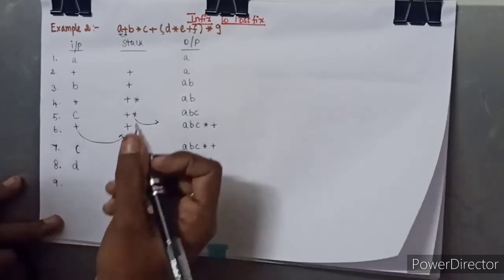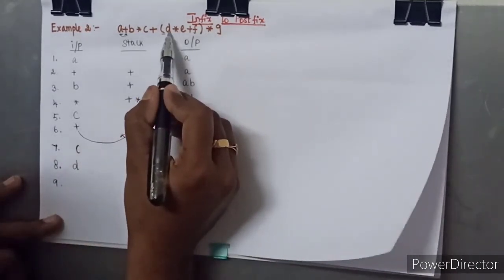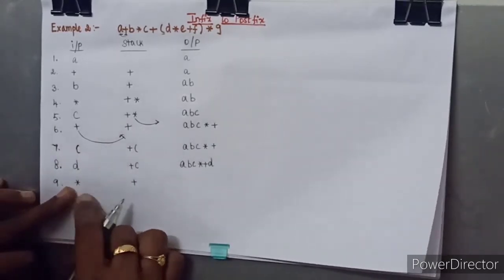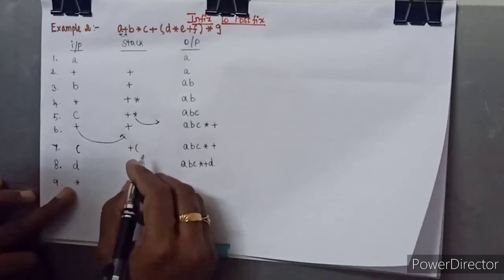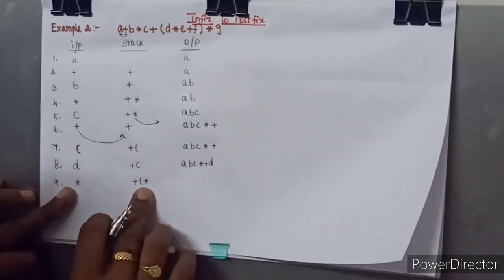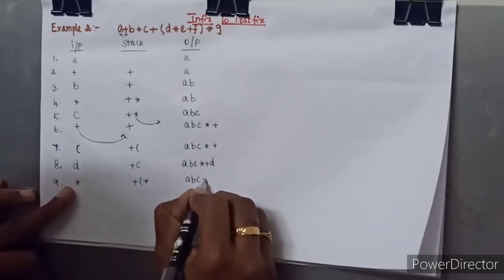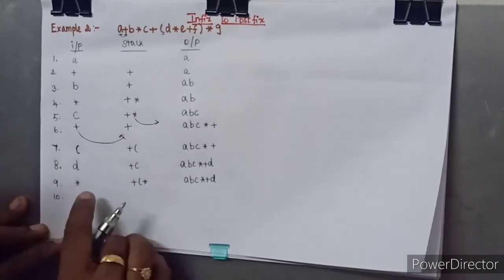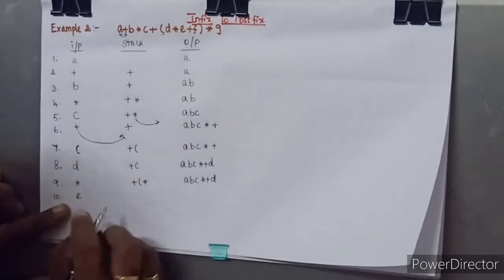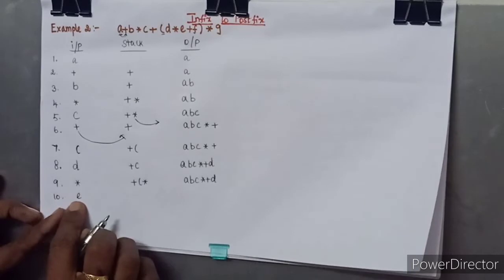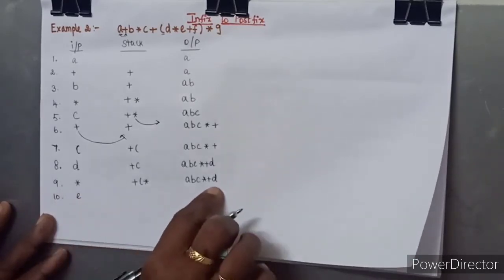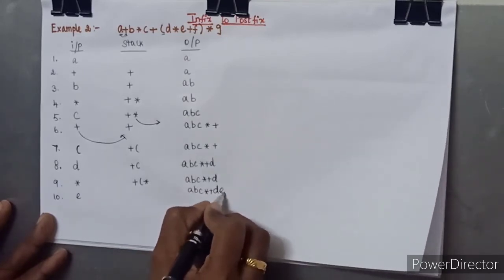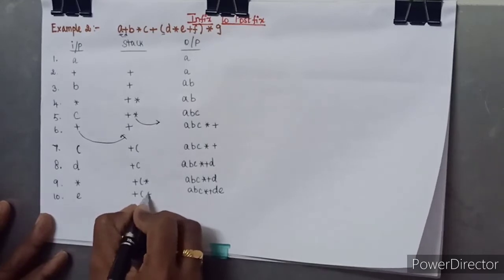After D, the next character is a multiplication symbol. It is pushed onto the stack above the open parenthesis, and the output remains unchanged. Next we read E, which is an operand, so there is no change to the stack. E is written to the output, giving A B C star plus D E.